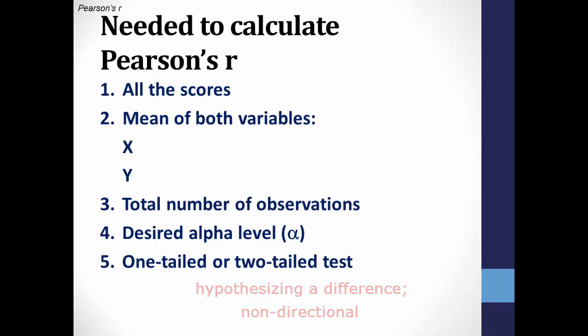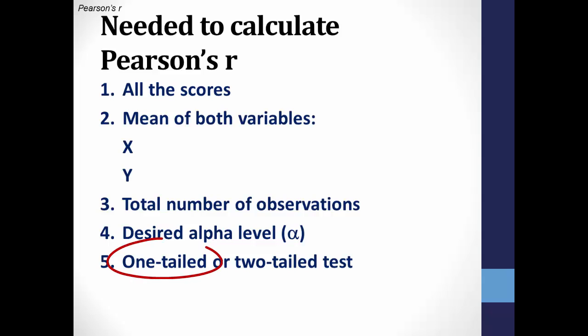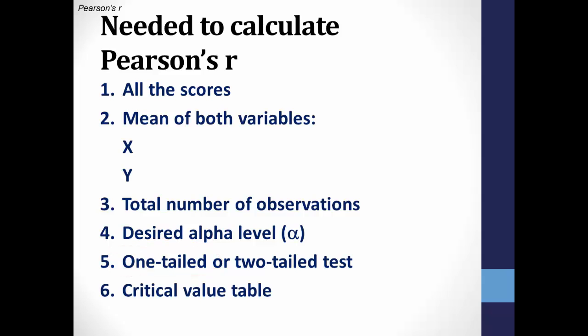For our example, we are hypothesizing that there is a positive correlation between hours of study and exam scores, so we would be using a one-tailed test. And of course, you'll need a table of critical R values so that you can compare your calculated R with the critical R to determine whether you should accept or reject the null hypothesis.